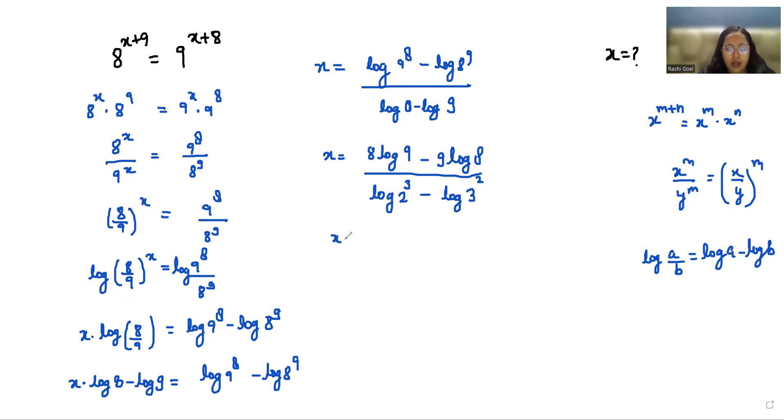So x equals 8 times 2 log 3 minus 9 times 3 log 2 by 3 log 2 minus 2 log 3. So it becomes 16 log 3 minus 27 log 2 in the numerator.